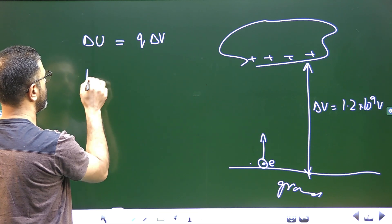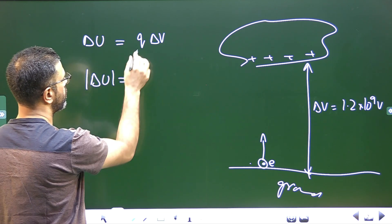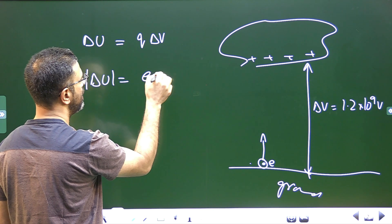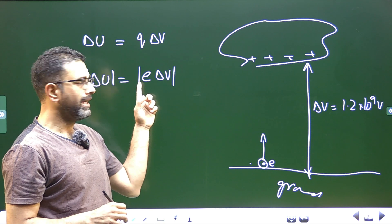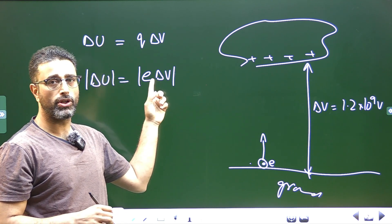So I will write here, let us take modulus. Delta U is equal to, instead of Q, I will write E into delta V, again the modulus. E is the charge of the electron, delta V is the potential difference.